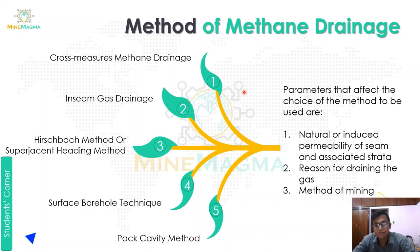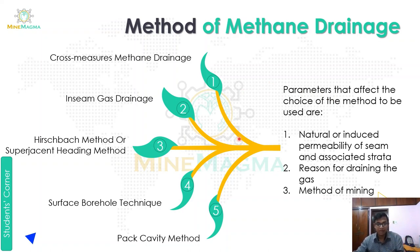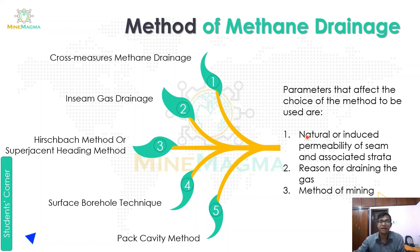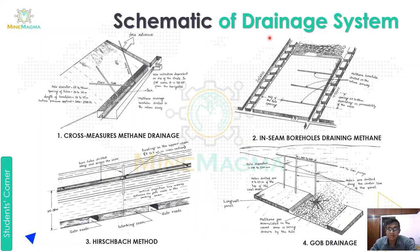Now let us move to our next part: methods of methane drainage. We have studied methane drainage in the last video, and now we will see the different methods. First, we look at the parameters that affect the choice of method to be used. These are: first, the natural or induced permeability of the seam and associated strata; second, the reason for draining the gas; and third, the mining method being used. Based on these three parameters, we consider and apply different methane drainage methods.